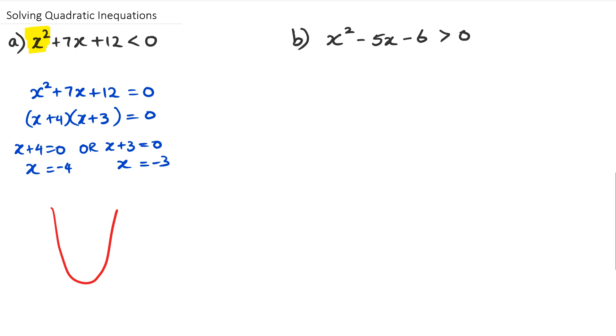And the symbol here where it actually says less than zero, I'm looking for when is this parabola less than zero. Now if you think about it, this parabola, when you sketch it, it is going to look something like this.